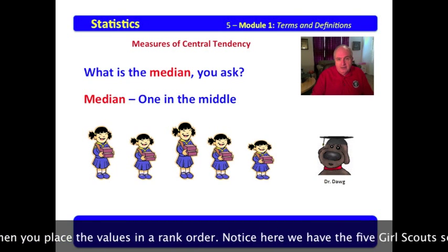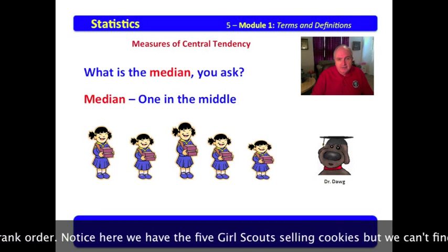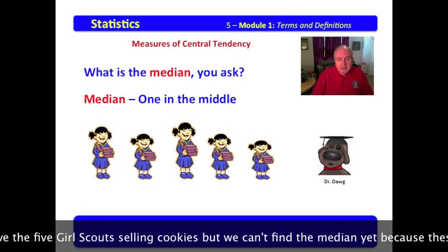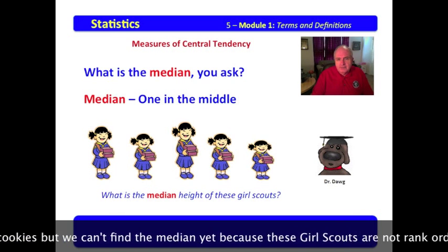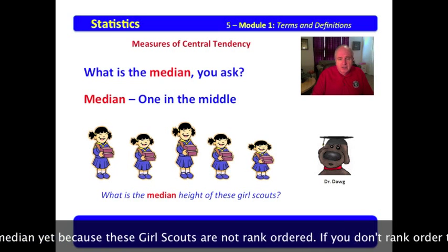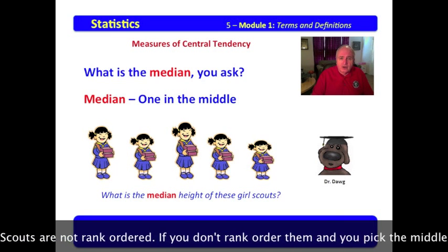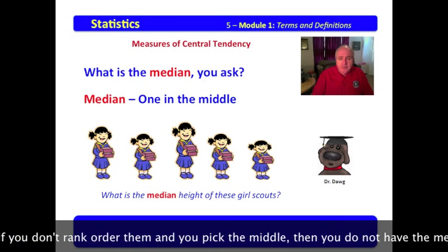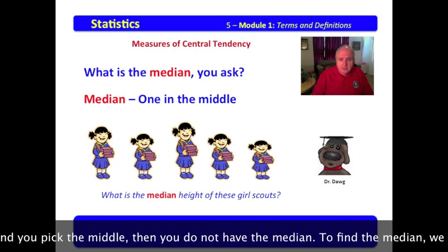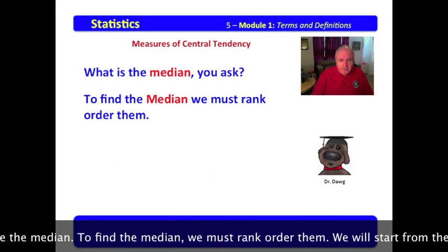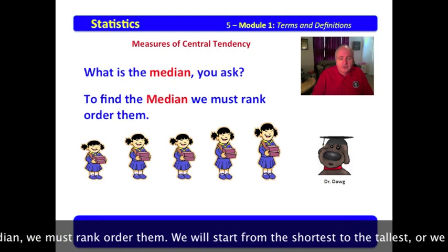Notice here we have the five Girl Scouts selling cookies, but we can't find the median yet because these Girl Scouts are not rank ordered. If you don't rank order them and you pick the middle, then you do not have the median.